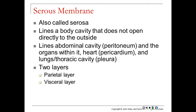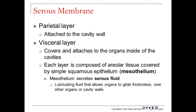Serous membranes, also called serosa, line body cavities that don't open to the outside. The three major serous membranes are: the peritoneum lining the abdominal cavity and its organs, the pericardium surrounding the heart, and the pleura surrounding the lungs — a right pleura and a left pleura. Each serous membrane has two layers: a parietal layer on the outside and a visceral layer lying directly on top of the organs.